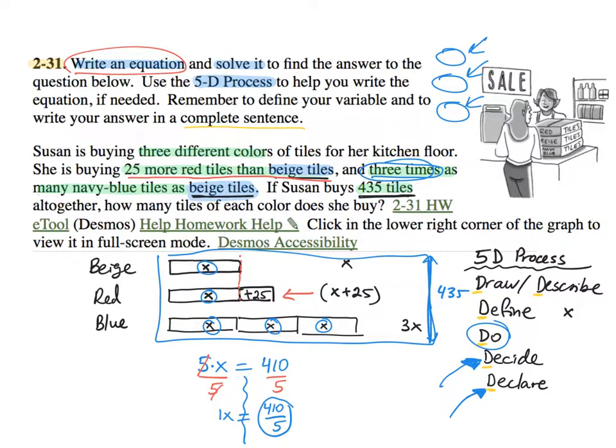So in this case, how many tiles of each? So the question was, we figure it out. So make sure you say X is the beige, which you will find. But then to find the red, you need to add those 25 tiles that were extra. And then the blue, how many? Three groups of X. So continue that on your own.